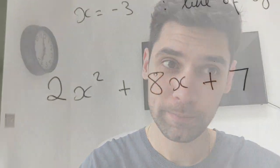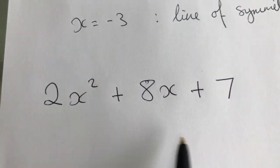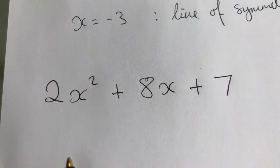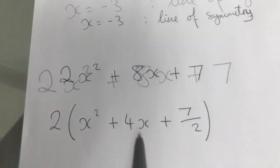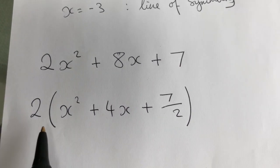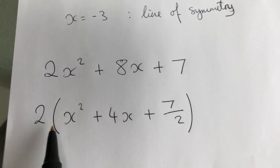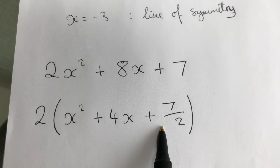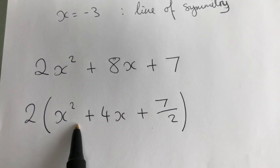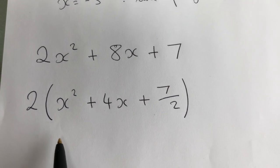So for this one, where we've got 2x squared, we have to factorize 2 out of the whole thing. So we've taken the factor of 2 out of everything — numerically it's still 2x squared, 8x and 7, but now we've got 1x squared inside the bracket, which we needed to be able to do completing the square.